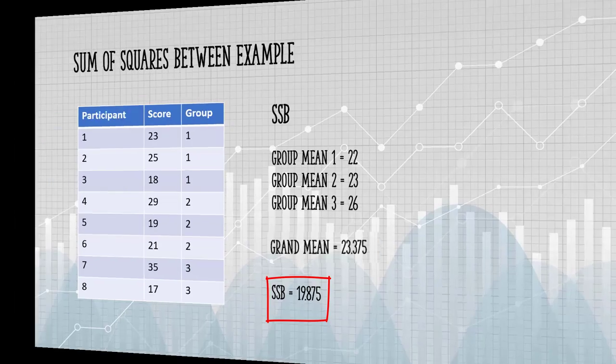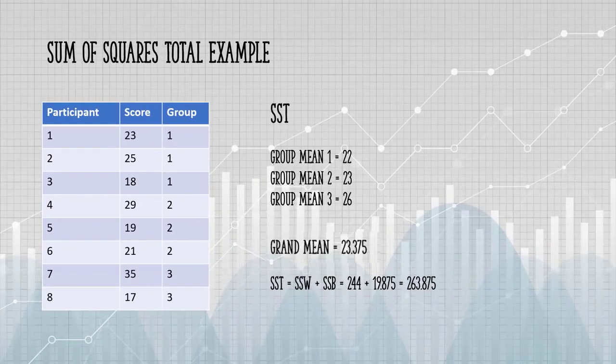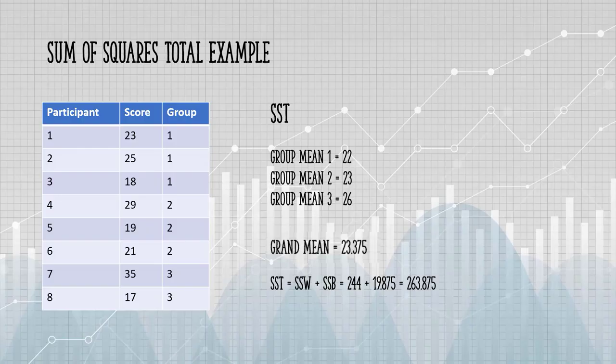For the sum of squares total, if you have already calculated SSW and SSB, all you need to do is add those together to get the sum of squares total.